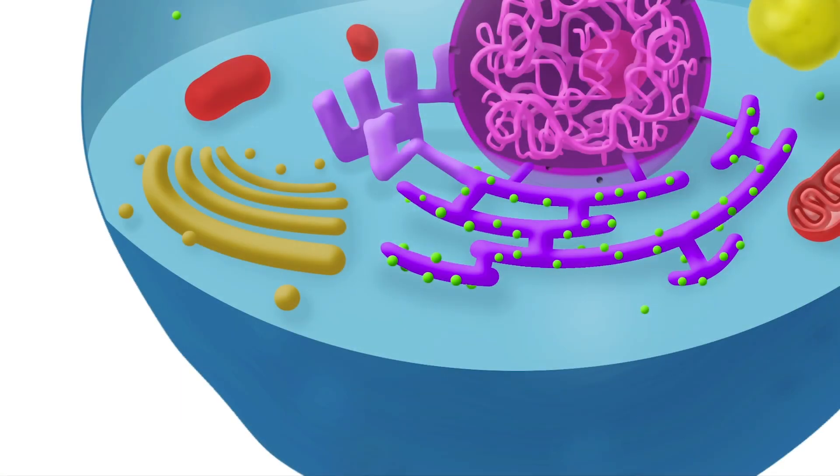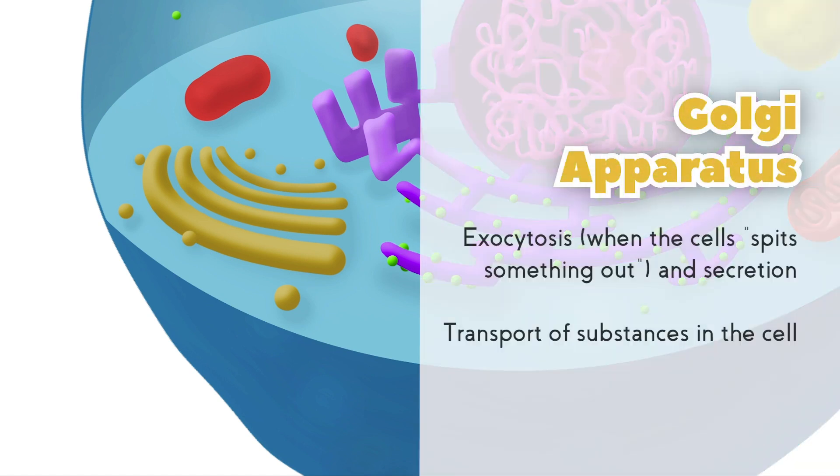Now, this yellow system of tubes that kind of resemble the Wi-Fi symbol is called the Golgi apparatus. Its job is to perform exocytosis when the cell spits something out, like when a cell secretes hormones, for example.